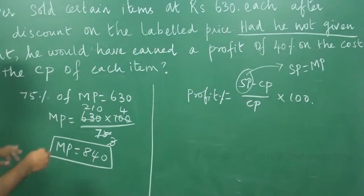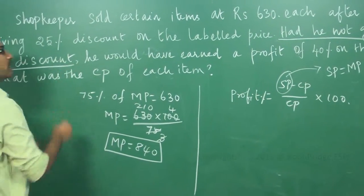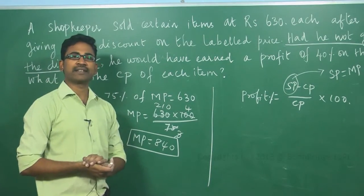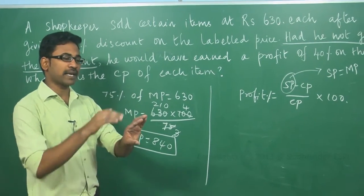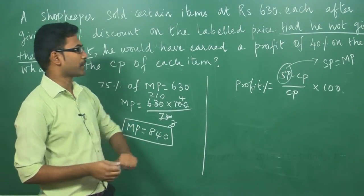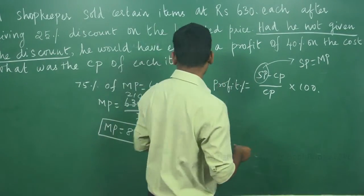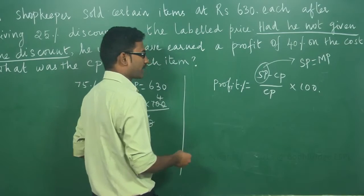had he not given the discount? What it means? If he is not given discount, the market price will be equal to the selling price. Whatever the market price, same price he is making as a selling price. So selling price is nothing but whatever we got as a market price.